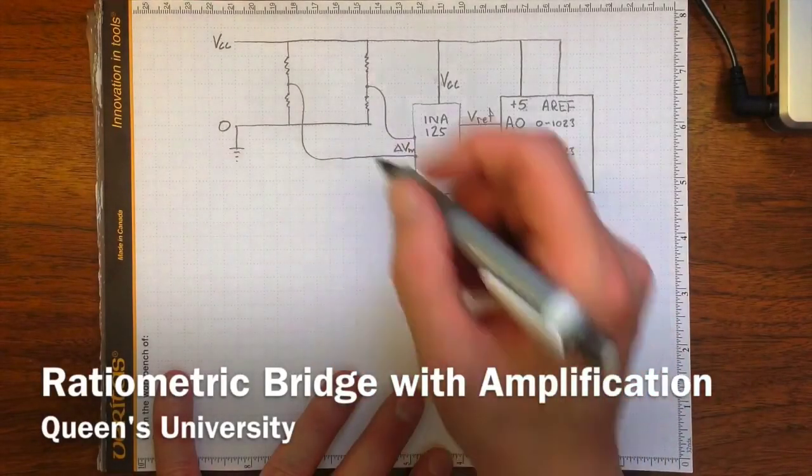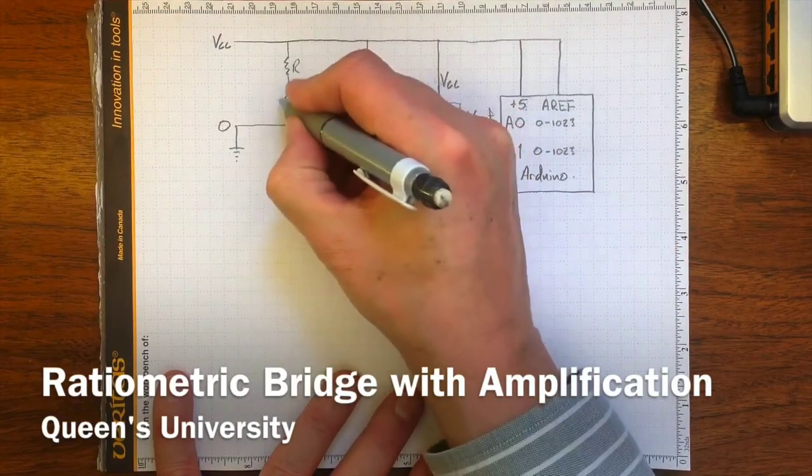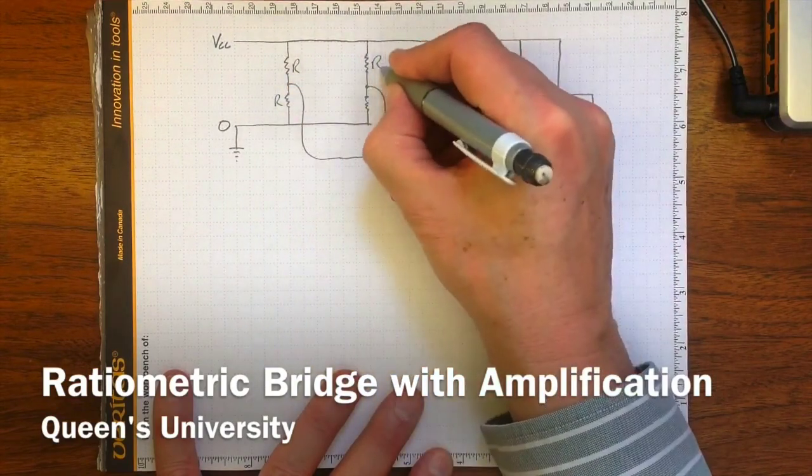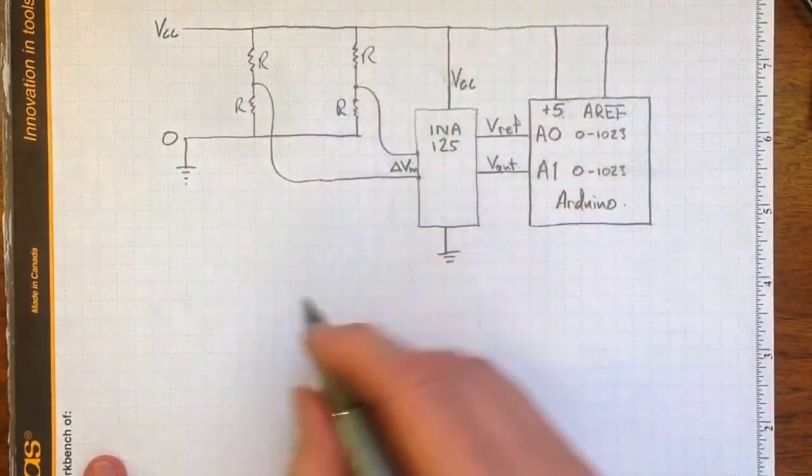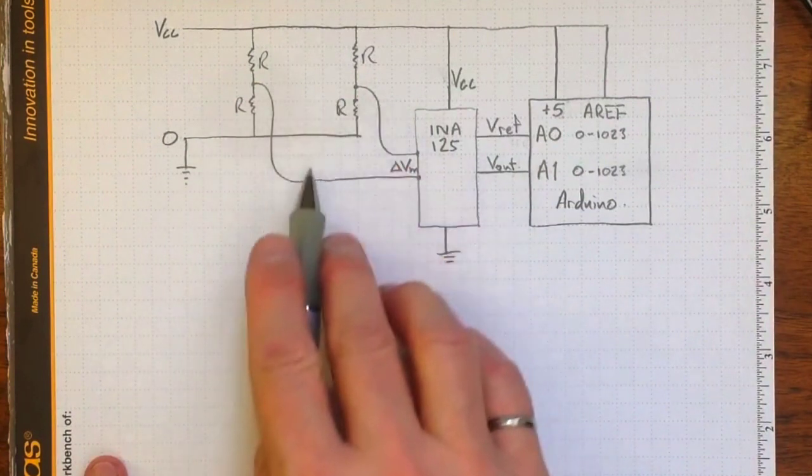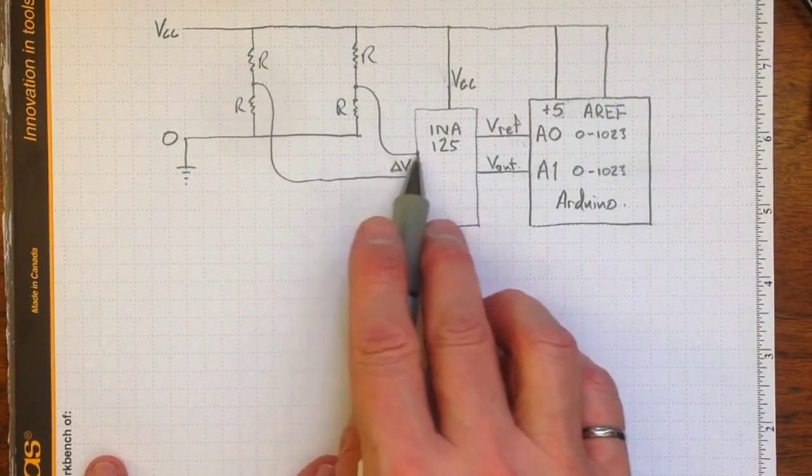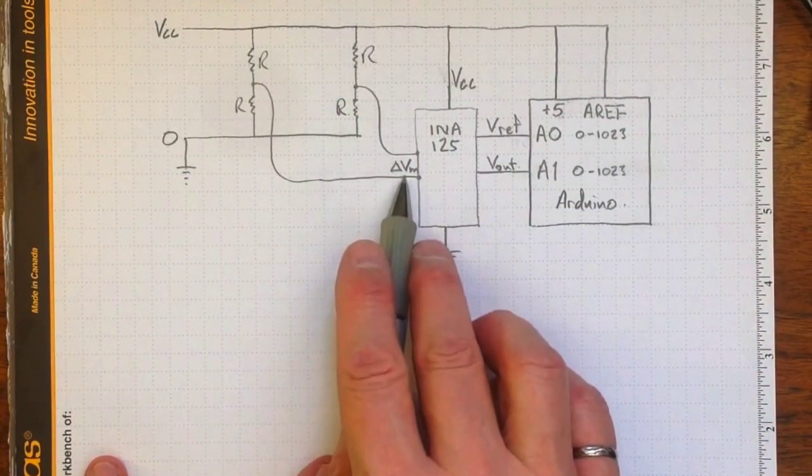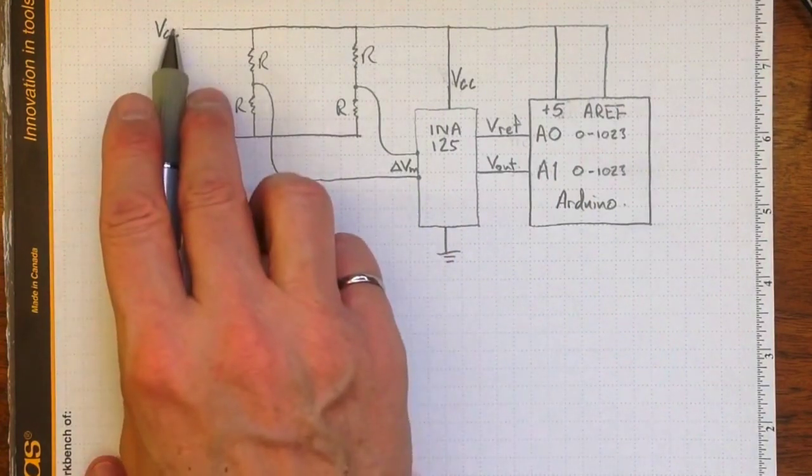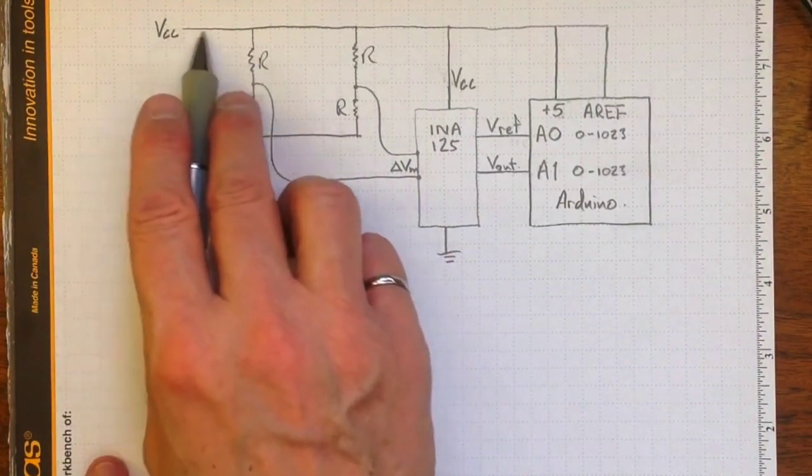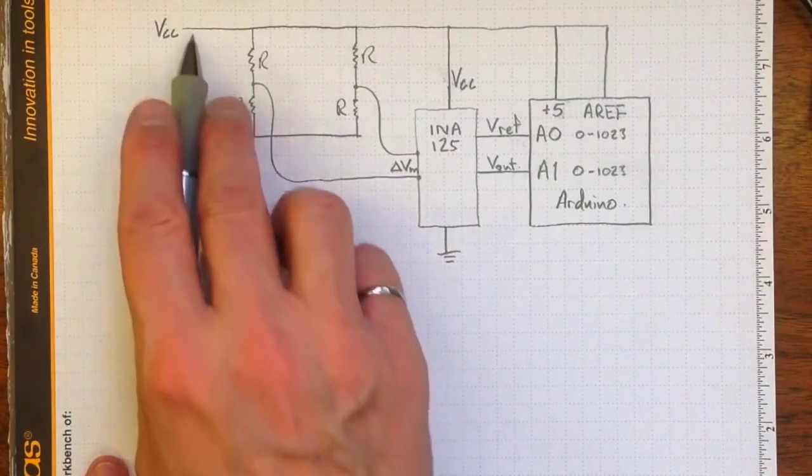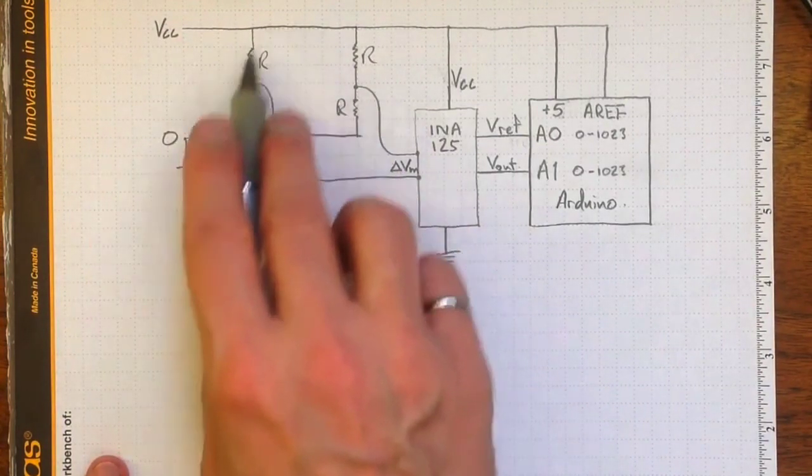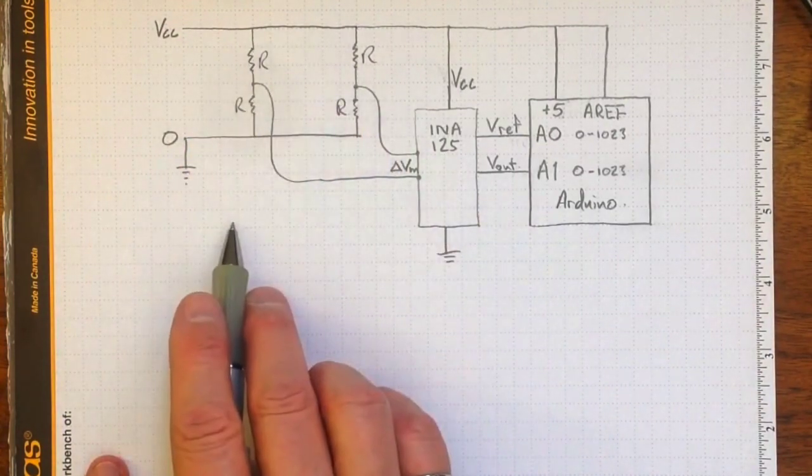If we hook up our strain gauge bridge with our four resistances from our four different gauges so that we get a measured voltage difference, this delta Vm in between them, that delta Vm depends on the change in resistance and this voltage up here. So the bigger that voltage, the bigger this voltage for the same thing happening on the transducer.